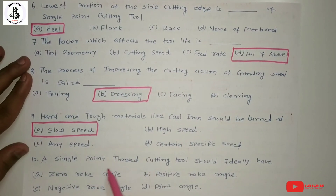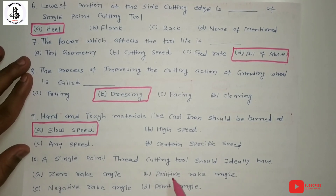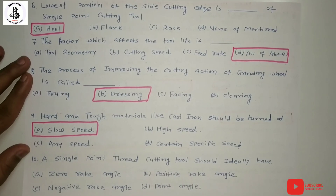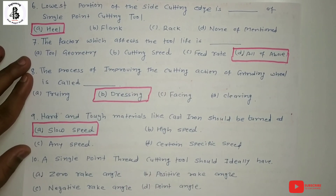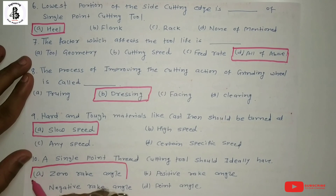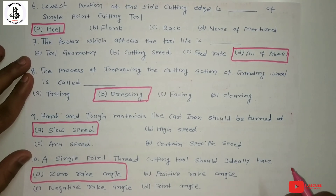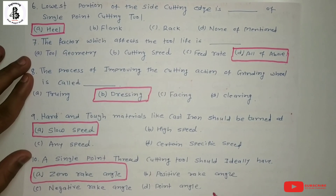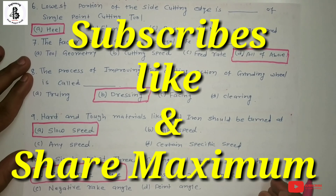Question 10: a single point thread cutting tool should ideally have which rake angle? Options: A) zero rake angle, B) positive rake angle, C) negative rake angle, D) point angle. For cutting threads on a workpiece, zero rake angle is always preferred. Positive rake angle is used in most general cases, and negative rake angle is used for brittle and hard materials. The answer is A, zero rake angle. If you like this video, please subscribe and share Modi Mechanical Engineering Tutorials. Thank you so much.